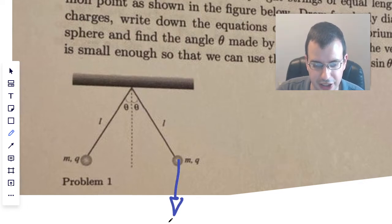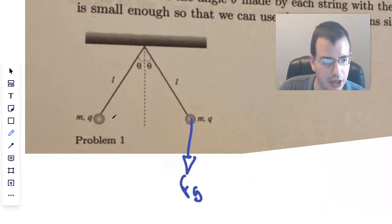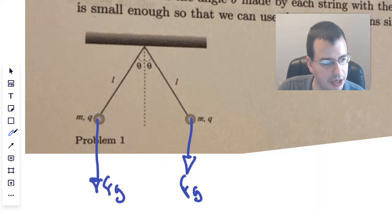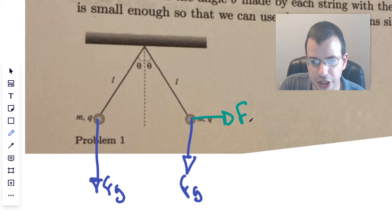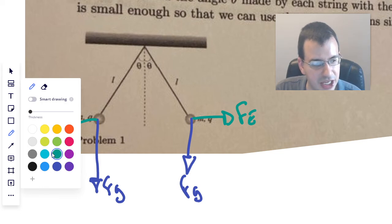So we have, on this guy, we have force due to gravity. Check. I'll do this one too because I already have out the blue pen. Then, get out the green pen for electrostatic. So they're the same charge, so they're opposing. Oh, that's a terrible arrow. There we go. Force electric. And then we have the tension.